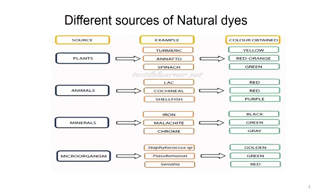Similarly, from microorganisms like Staphylococcus species we can get golden color, from Pseudomonas we can get green color, and from Serratia we can get red color. These are just a few examples to illustrate classification in terms of source of natural dye.